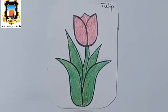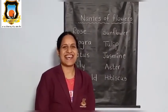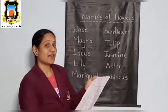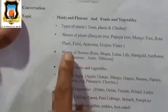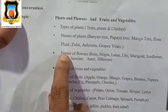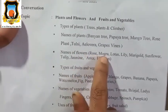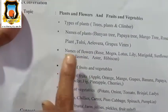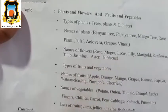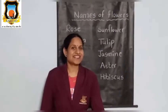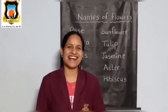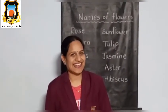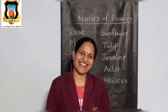So children, you have seen all these flowers. You have to remember them. This is your syllabus book paper, and here it is given. Say everyone — names of flowers: rose, mogra, lotus, lily, marigold, sunflower, tulip, jasmine, aster, and hibiscus. I hope you understand the names of plants and the names of flowers. You have to practice daily — show all these names in front of your mom and dad. Will everyone practice? Okay. Thank you.